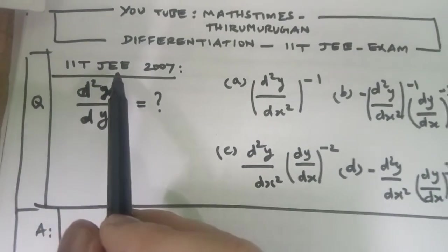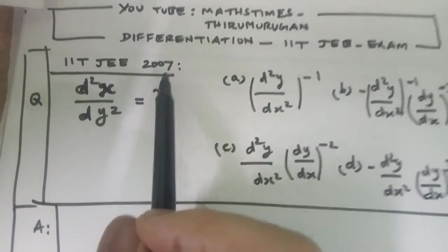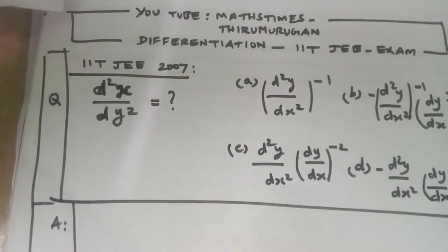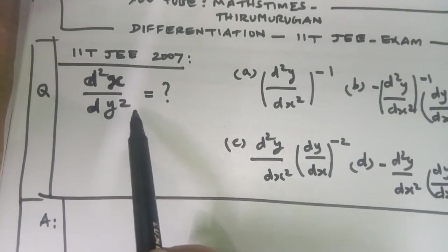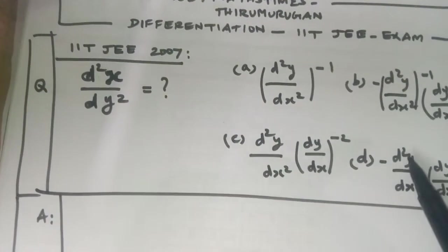I take one problem, IIT JEE 2007. The question is, we are going to find out d²x/dy² value. They may give four options.